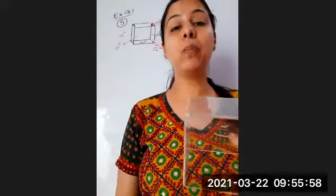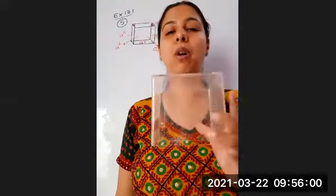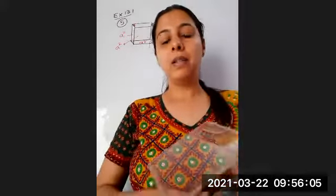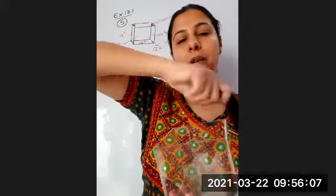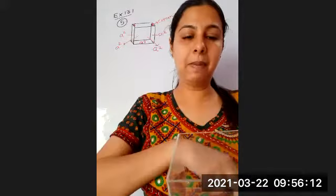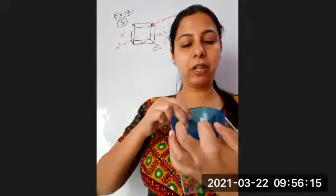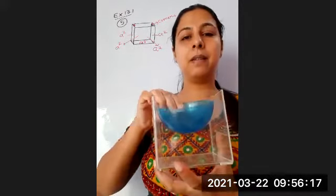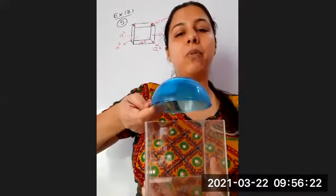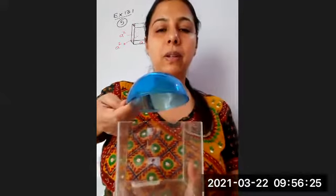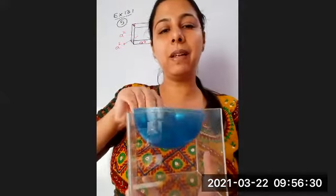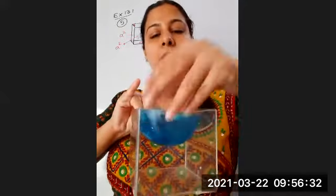I don't have a wooden block with me so I'm just showing you. It is a cubical block, and in it you carve out a depression — a hemispherical shape. So we can understand it will look something like this. In the previous question it was surmounted — placed on top. But now it is depressed, made inside. Please pay attention.